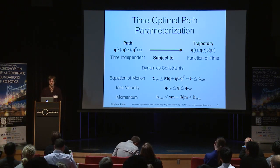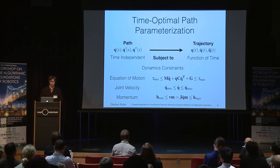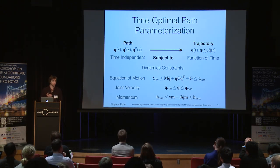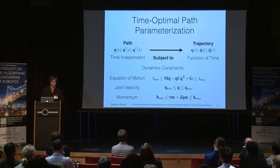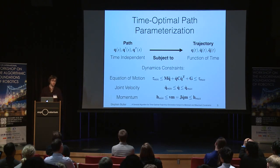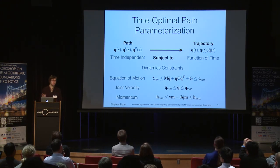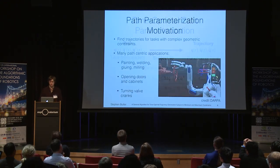This trajectory must be subject to the dynamic constraints of the robot — for example, the equation of motion, which I'll refer to as the torque constraints, and also the equation used to propagate the system. There may also be additional constraints such as joint velocity, or safety constraints like momentum that we'd like to keep within bounds. Additionally, we have some cost function we'd like to optimize over. For this work, we'll be focusing on time optimality.